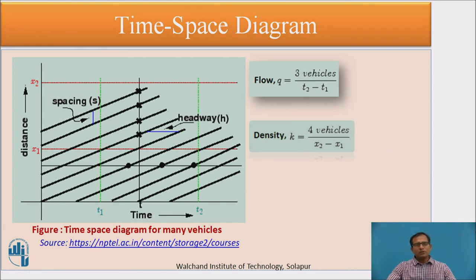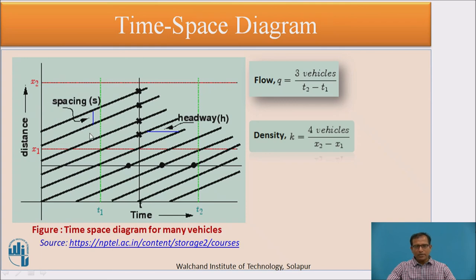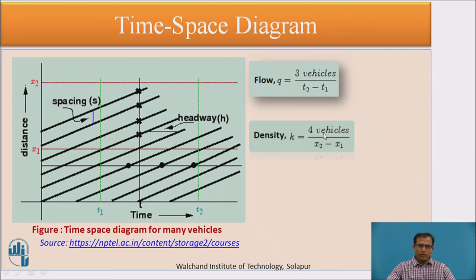Using time and distance data, we can draw a time-space diagram. The inclined lines represent vehicles plotted against time and distance, and the slope of each line gives the speed. From this diagram, flow q can be calculated by counting vehicles between times t1 and t2, and density K by counting vehicles between positions x1 and x2 and dividing by (x2 − x1).